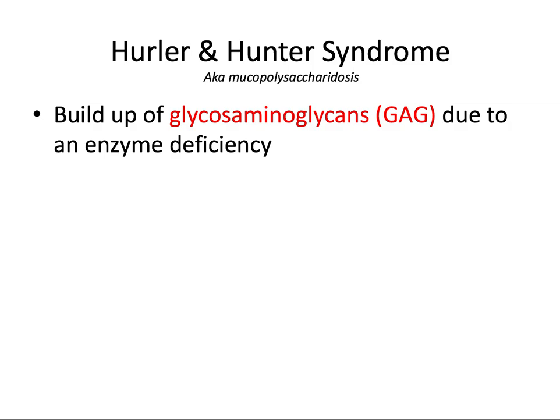Finally, let's cover Hurler and Hunter syndromes. They are two separate syndromes but are often tested together. Both are mucopolysaccharidoses — these patients experience a buildup of glycosaminoglycans in their lysosomes because of an enzyme deficiency that prevents proper breakdown. A helpful mnemonic: 'hurl' is another word for vomiting, so hurl, gag, glycosaminoglycans.